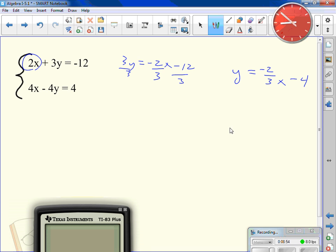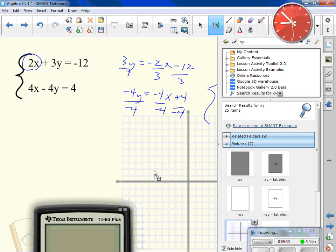The second one, what needs to be moved? 4x. So the positive 4x becomes a negative 4x when you move it to the other side. Next step, divide everything by negative 4. Y equals, what's negative 4 divided by negative 4? 1x. What's 4 divided by negative 4? Negative 1. This is my system rearranged. I'm graphing it now.